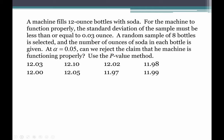One final example using the p-value method. A machine fills 12-ounce bottles. For the machine to function properly, the standard deviation must be less than or equal to 0.03 ounces. A random sample of 8 bottles is selected. At alpha = 0.05, can we reject the claim that the machine is functioning properly? Use the p-value method. When stating hypotheses, be very careful — we are focusing on standard deviation, so our symbol is just little sigma, not sigma-squared.